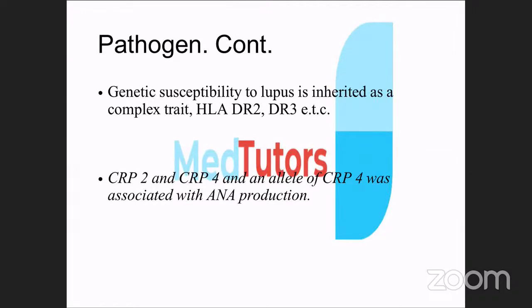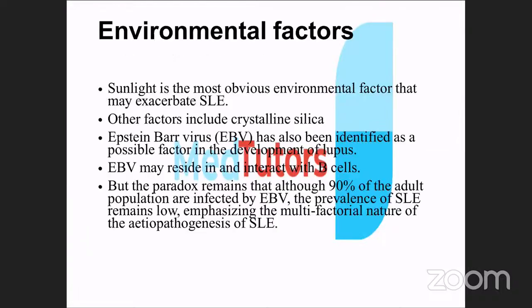Genetically, HLA-DR2 and HLA-DR3 are associated with SLE and are also linked to rheumatoid arthritis. Environmental factors include sunlight exposure — known to exacerbate SLE — crystalline silica, and Epstein-Barr virus infection. Some literature reports that up to 30% of SLE patients have positive Epstein-Barr virus, making it highly implicated in the pathogenesis.